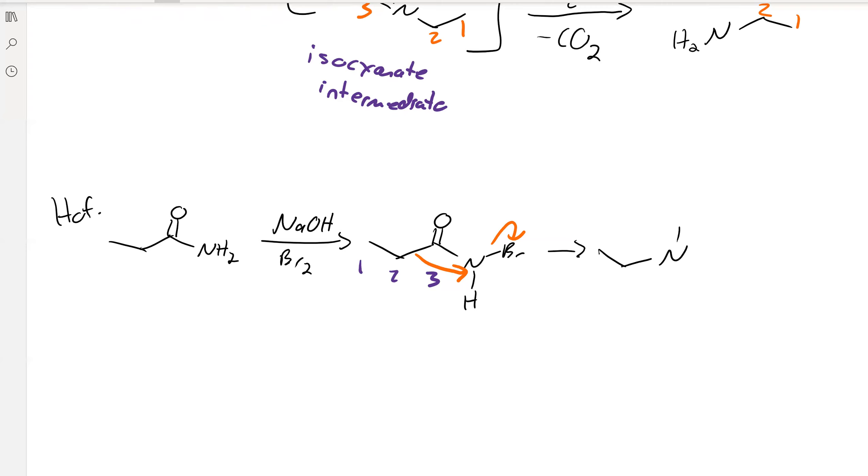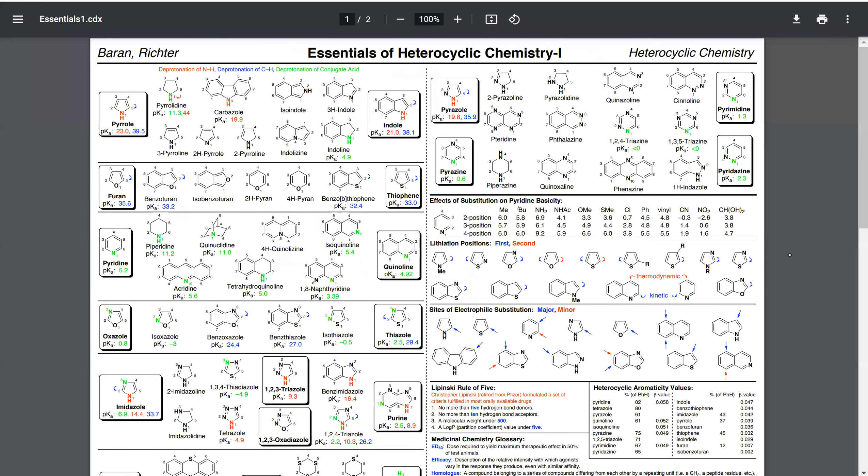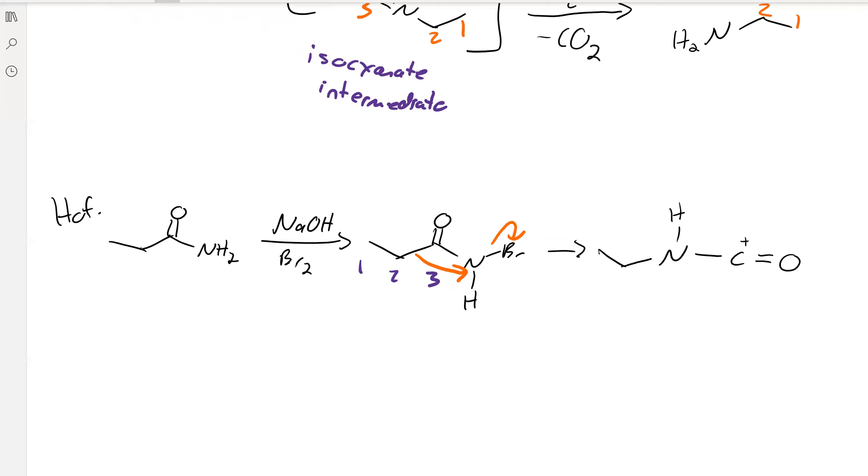It's still attached to a hydrogen, and it's still attached to the carbonyl. The carbonyl lost a bond but it didn't gain any electrons, so it now has a positive charge. And then some hydroxide can come in, deprotonate, and that'll form your isocyanate intermediate.